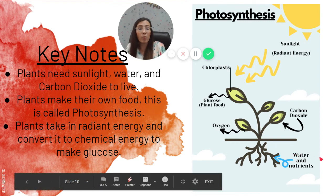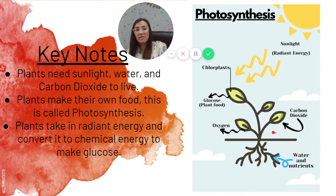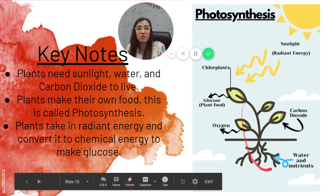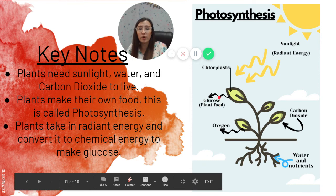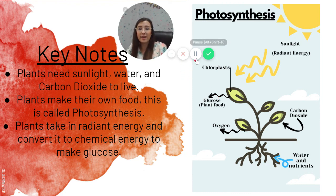The roots suck up water and nutrients from the ground, and the leaves take in carbon dioxide from the air. The plant does photosynthesis, releases the extra oxygen it doesn't need, and makes its plant food called glucose. Make sure your notes are complete, review this video if you need to, and move on to your next assignment. See you later, guys!